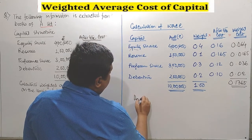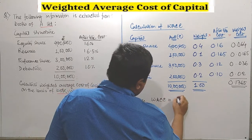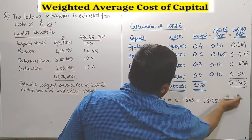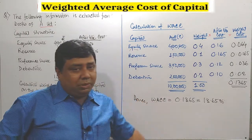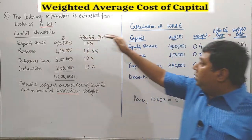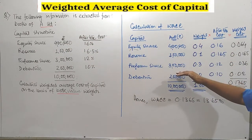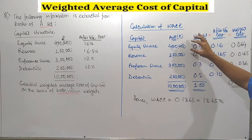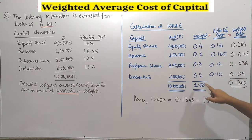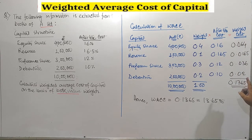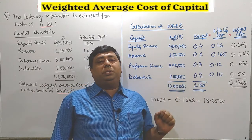Hence, WACC — weighted average cost of capital — is 0.1365, or rather 13.65%. In the calculation of cost of capital, you have to consider all components of capital according to their value or amount. Depending upon the contribution of each and every component considering the total amount, you calculate the weight. Then multiply weight into the specific cost to get the weighted cost, and the total gives you the WACC.